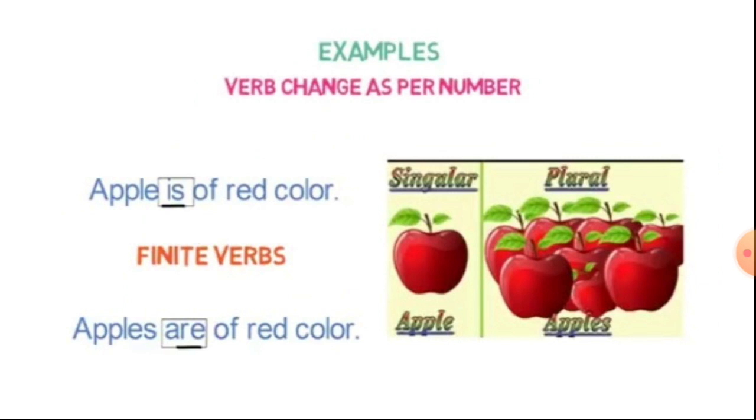Apple is of red color. And in the next example, apples are of red color. That means the first example is singular number, second example is plural number. So here is and are are also finite verbs.